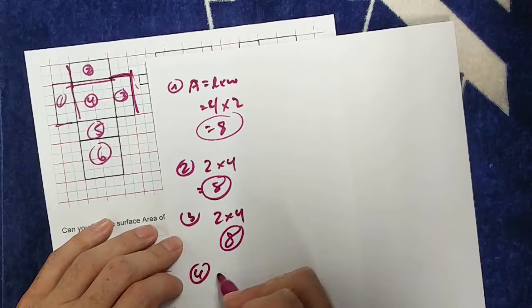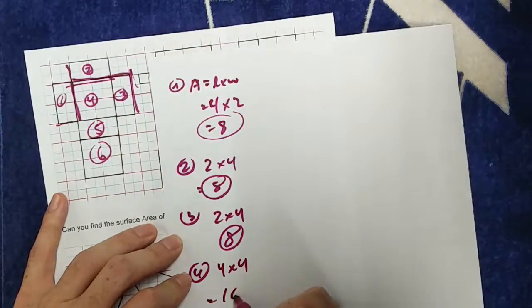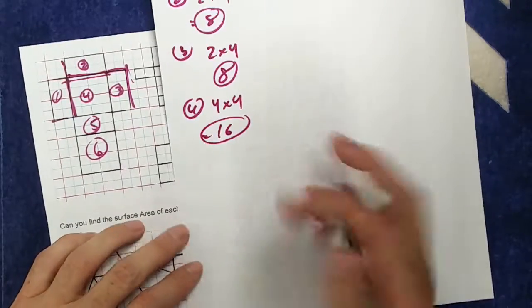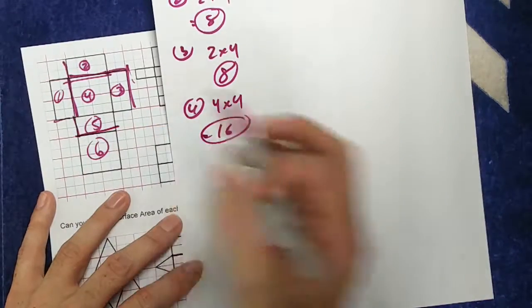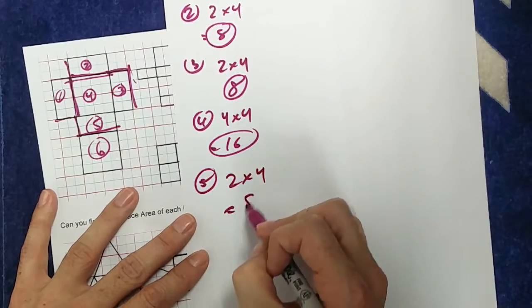I have the area of number 4, which is a 4 by 4, so 4 by 4 is 16. I have the area of 5, which is 2 by 4, so 2 by 4, which is 8.